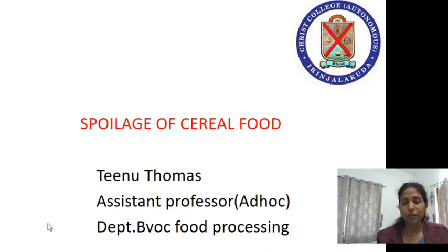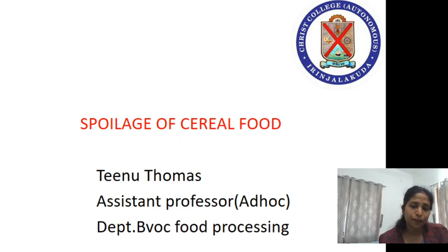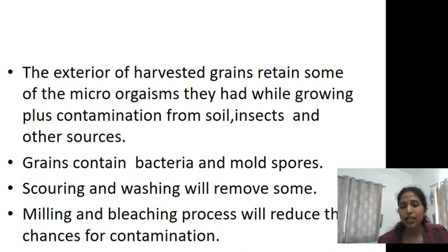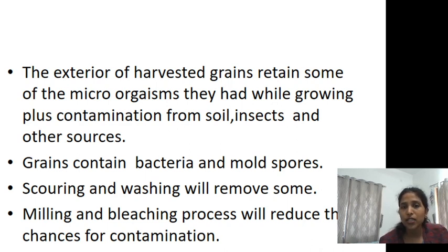Today we are going to discuss the spoilage of cereal foods. Microorganisms need temperature, pH, nutrients, and other factors for their growth, and cereals are no different. The exterior of harvested grains retains microorganisms from when they were growing, plus contamination from soil, insects, and other sources. Grains contain bacteria and mold spores, and the major source is the soil present on cereals during harvesting.